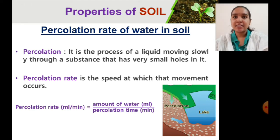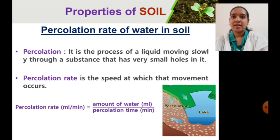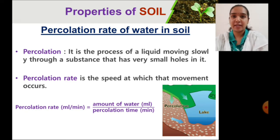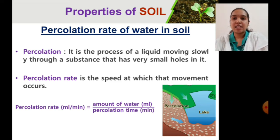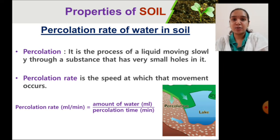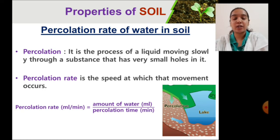What is percolation rate? It is the speed at which the movement of liquid — like water — occurs through a substance. There is a formula to determine the percolation rate: percolation rate equals the amount of water that runs through the soil divided by the time taken for percolation.